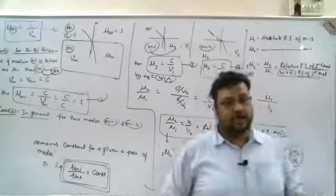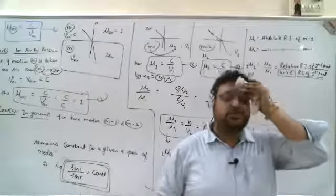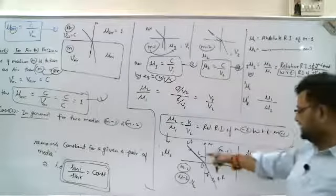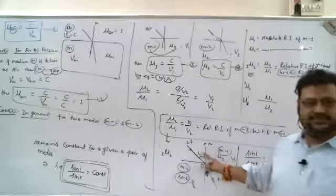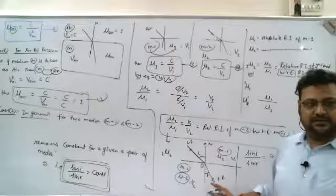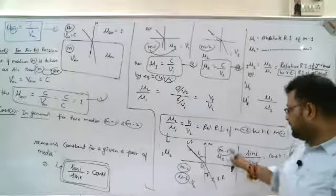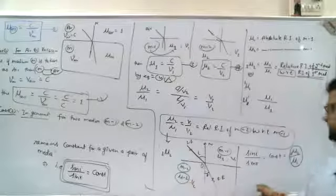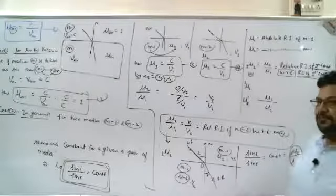As I have told you earlier, if we put the sine i upon sine r value of root 3, then we saw that for the same pair, if we put the value of i as 60 and r as 30, for medium 1 and medium 2, if we get root 3, then we realized that root 3 answer is mu2 upon mu1.